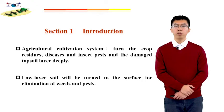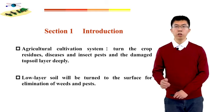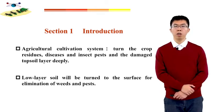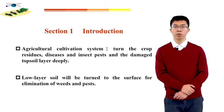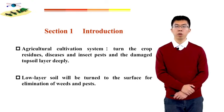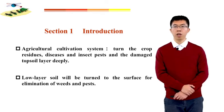Cultivated land is one of the most basic and important work links in field agricultural production. The purpose of cultivation is to deep plow the soil in the traditional agricultural cultivation system — to turn the crop residues, diseases, and insect pests, and the damaged topsoil layer deeply. After doing this, the lower-layer soil that has been restored for a long time will be turned back to the surface for the elimination of weeds and pests, improving the growth environment of the crops.